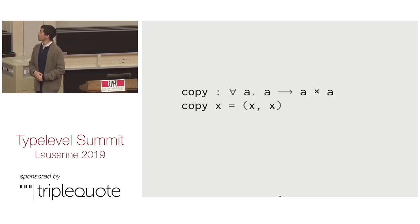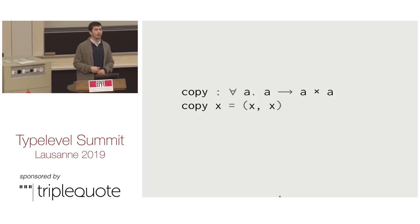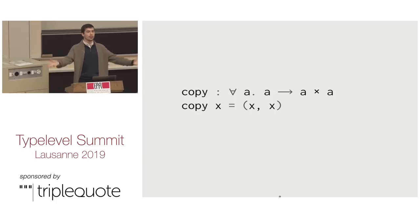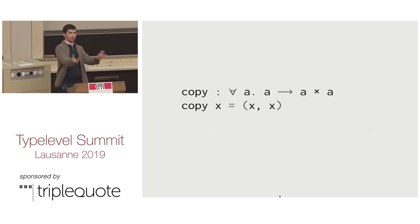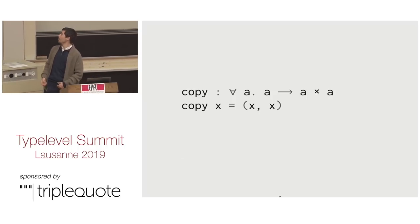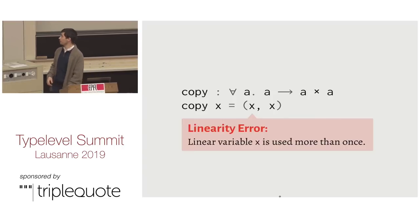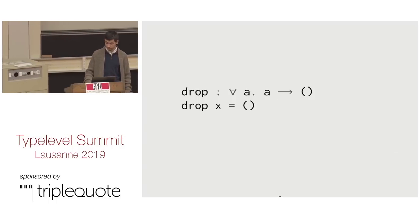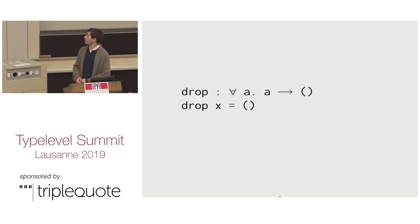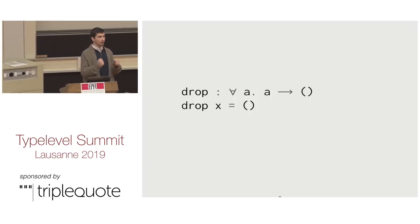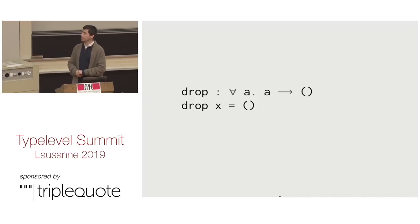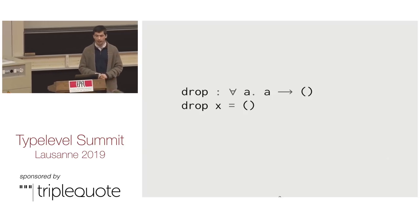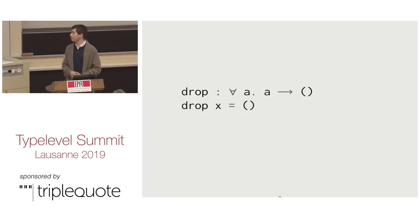What about copy? If you give me anything of type A — the 'for all A' quantifies over all types — can I give you back two copies of it? No. So as you might have guessed, this is not a linear function, and our interpreter will say: 'linearity error: linear variable x is used more than once.' We're not affine — we're especially painful, linear — you have to use it. This is great for resource reasoning, because we can enforce things like something must be closed, you must free this memory. Linear variable x is never used is also an error.